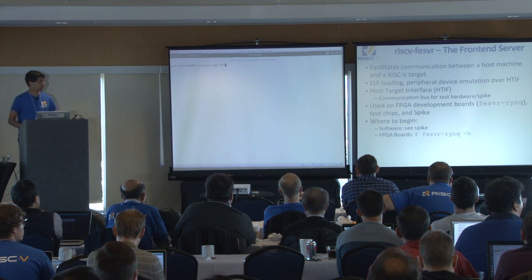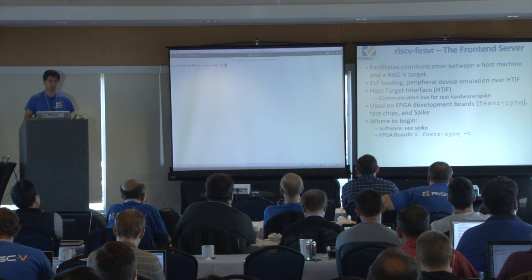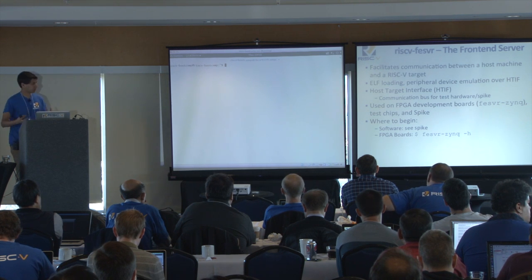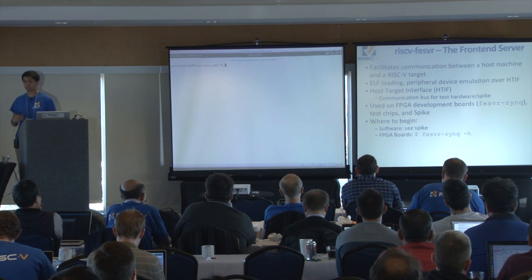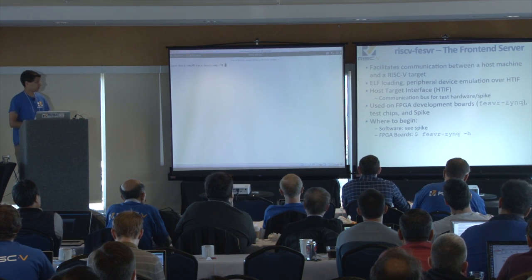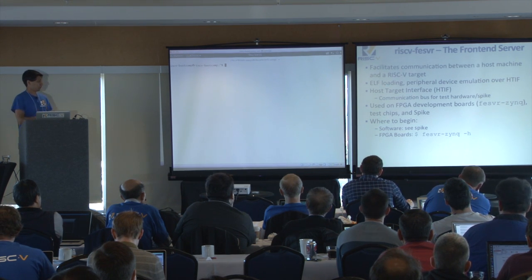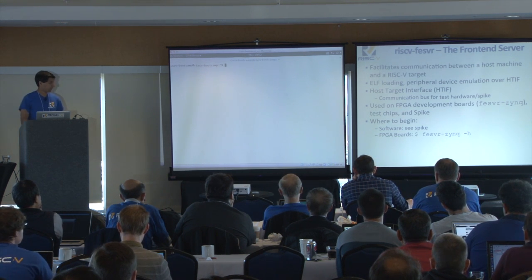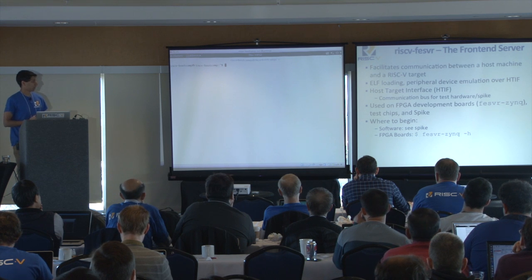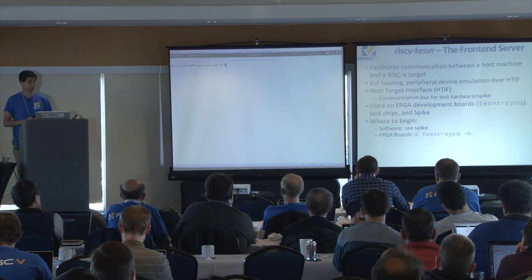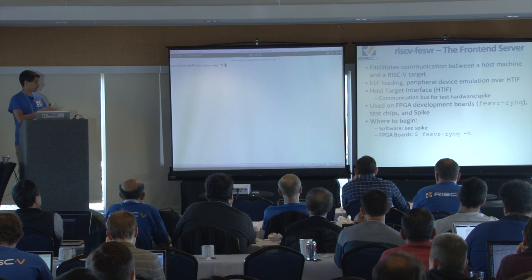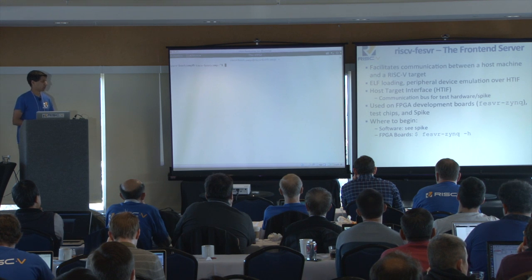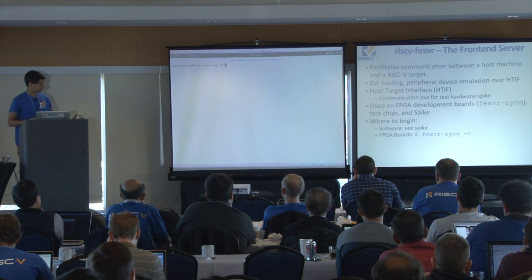FESVR — the front-end server. The goal is to facilitate communication between a host machine and a RISC-V target. It does things like ELF loading and the general bootstrapping process. It also simulates some basic devices over the HTF bus. You'll see it used on FPGA development boards — it's called fesvr-zedboard there — also with test chips and Spike. On the software side, we'll see Spike in a couple of slides. If you're working on an FPGA board, you can type fesvr-zedboard -h to see the options.